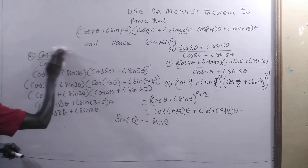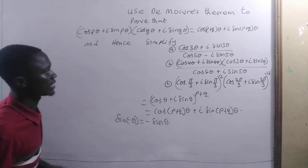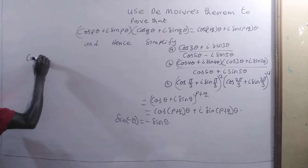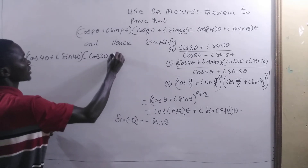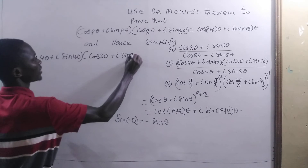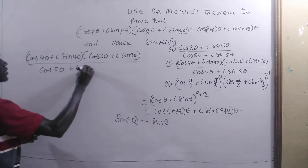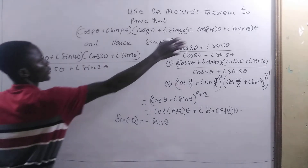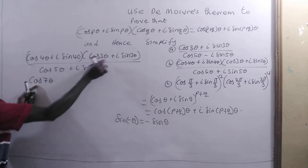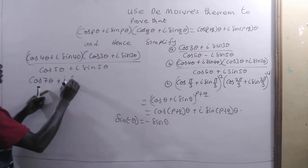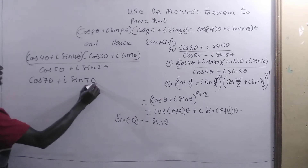Now let's take the second example. We have cosine(4θ) + i·sine(4θ) times cosine(3θ) + i·sine(3θ). Applying De Moivre's theorem to the numerator, we add the angles: 4 + 3 = 7, giving cosine(7θ) + i·sine(7θ). That is very simple.